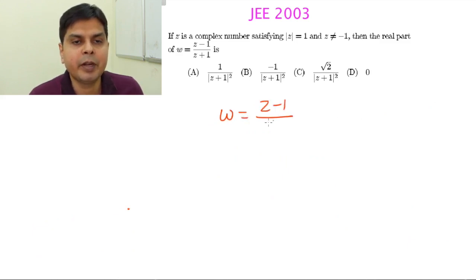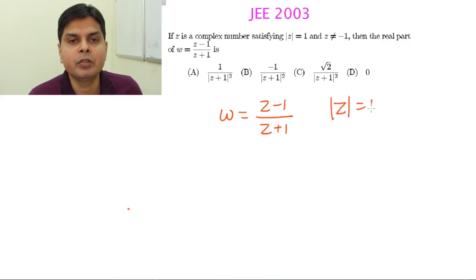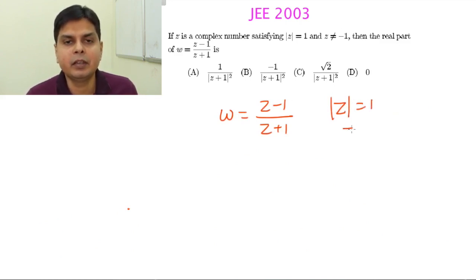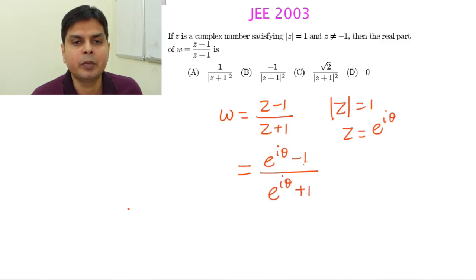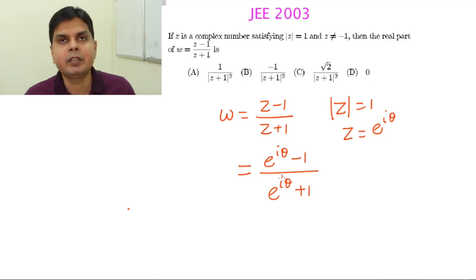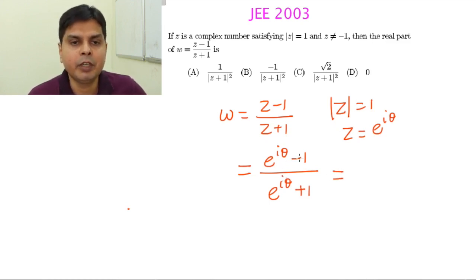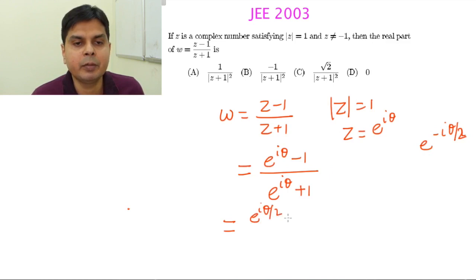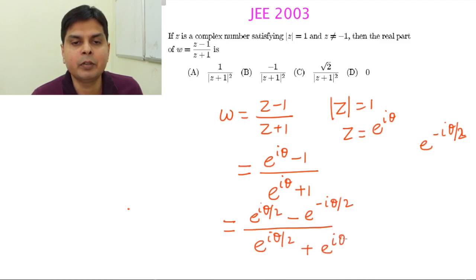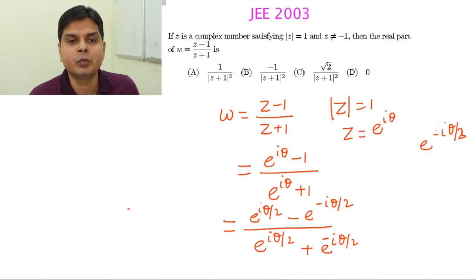For Method 2: W equals (Z minus 1) by (Z plus 1) and mod Z equals 1. When any complex number satisfies mod Z equal to 1, we can write Z equals e to the power iθ. Substituting, we get (e^iθ minus 1) divided by (e^iθ plus 1). To simplify, multiply both numerator and denominator by e to the power minus iθ/2. This gives (e^(iθ/2) minus e^(-iθ/2)) in the numerator and (e^(iθ/2) plus e^(-iθ/2)) in the denominator.